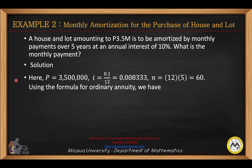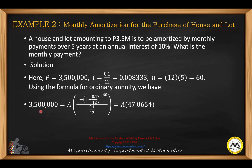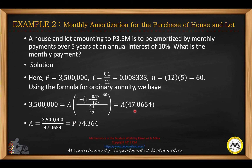Using the formula for ordinary annuity: P equals A divided by I times 1 minus 1 plus I raised to negative N, where A is unknown, I is J over M, and N is the total number of periods. Computing the value of this quantity gives 47.0654. Cross-multiplying, 3,500,000 divided by this coefficient gives you 74,364 pesos monthly for the house and lot loan over 5 years.